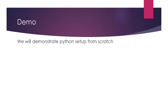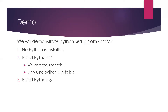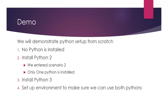In this demonstration we'll start from scratch, assuming no Python is installed. We will download and install Python 2 first, making our system ready for Python 2 — entering the scenario where only one Python version is available. Then we'll go on to install Python 3 on top of Python 2, and finally set up an environment to make sure we can use both Pythons on our system. So let's get started.